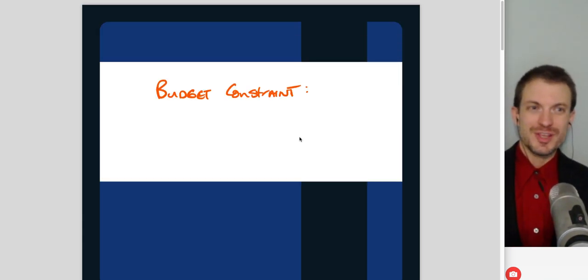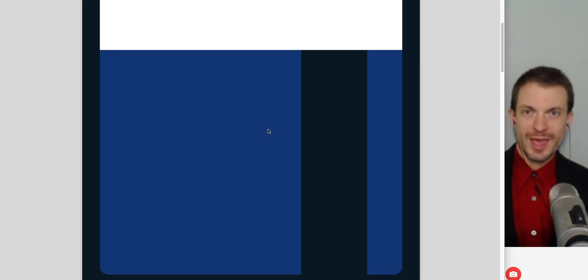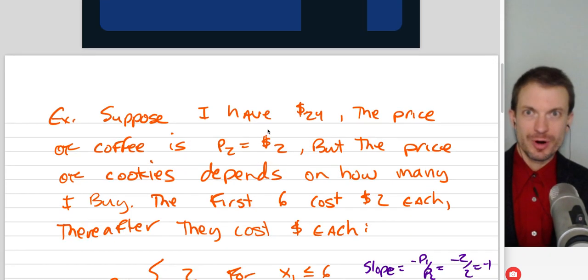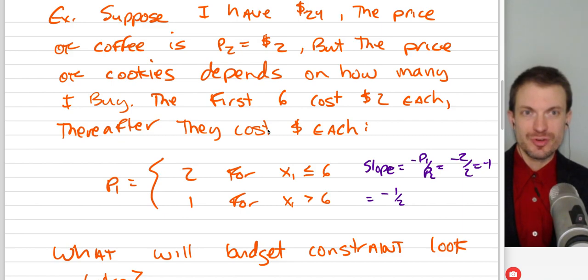Okay, hello and welcome everyone. In this video I'm going to do a budget constraint example. So I'm going to talk about what happens or how to solve a problem where the price of one of the goods depends on how much you've consumed.